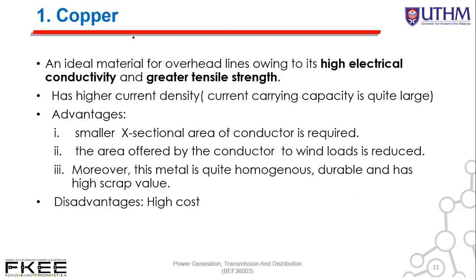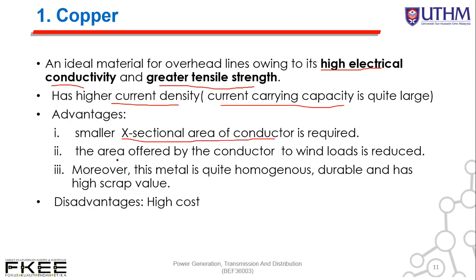First, copper is an ideal material for overhead lines owing to its high electrical conductivity and greater tensile strength. It has higher current density, which means its current carrying capacity is quite large. A smaller cross-sectional area of conductor is required, reducing the area exposed to wind load. This metal is quite homogeneous, durable, and has high scrap value. However, its disadvantage is its high cost.